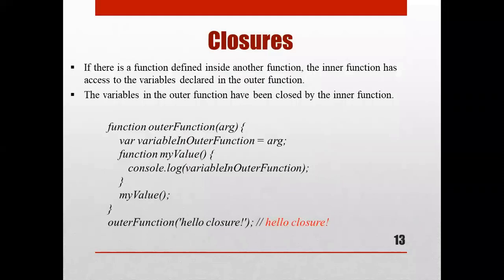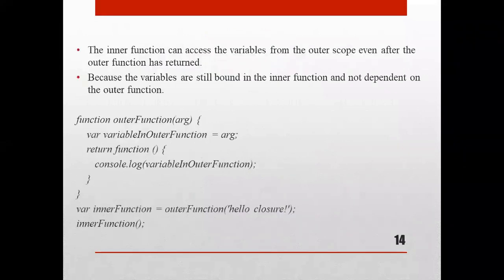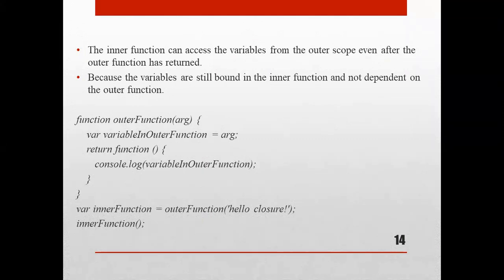We have seen how a function defined inside another function works. The inner function can access the variables from the outer scope even after the outer function has returned. Even if the outer function has returned, we can still access those variables from the outer scope — because the variables are still bound in the inner function and not dependent on the outer function.